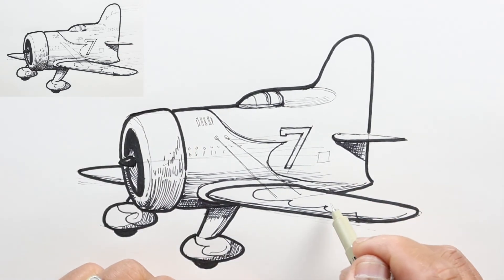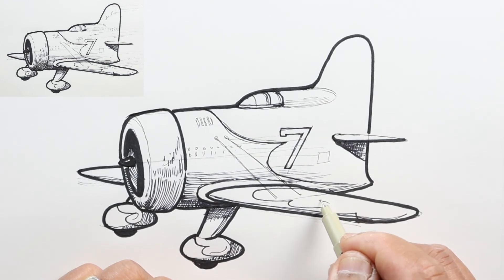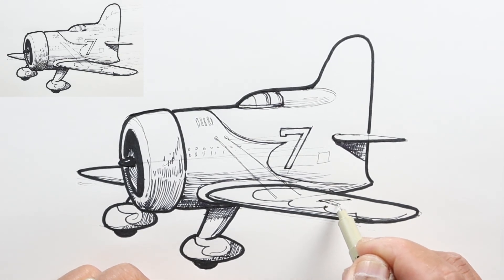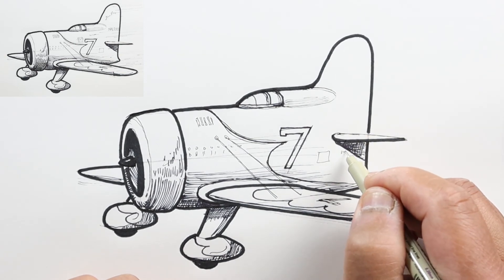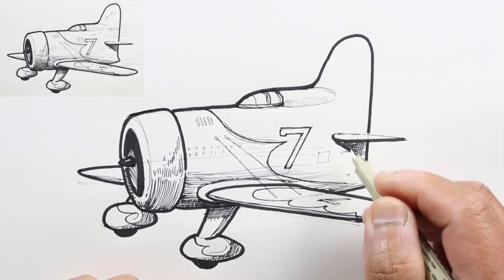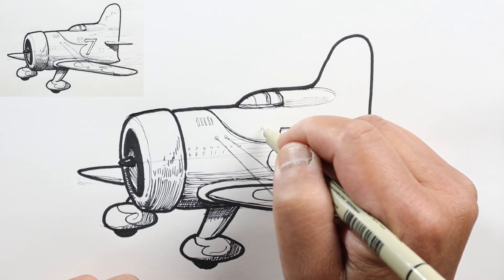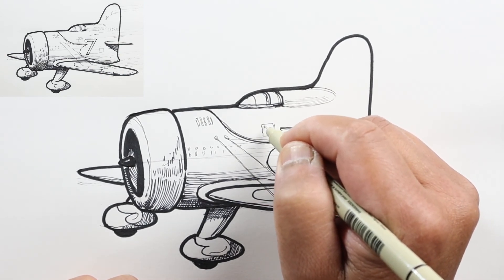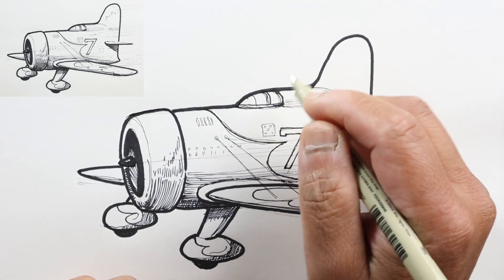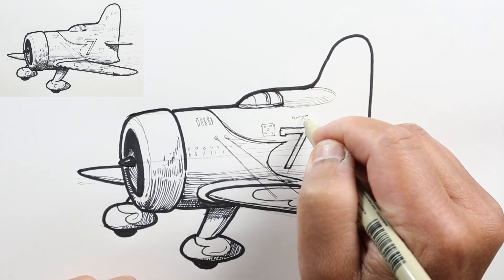There's also a number seven here, so I'll use my thinner marker because this number seven is going to be foreshortened. Just some more detail here, and there's like a dice up here and maybe some writing.